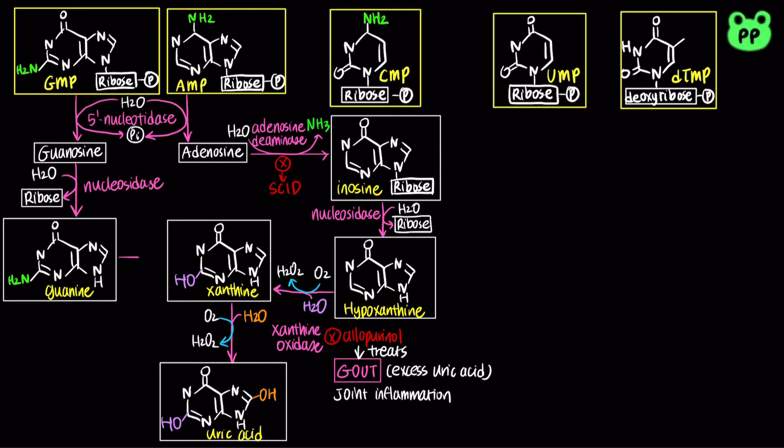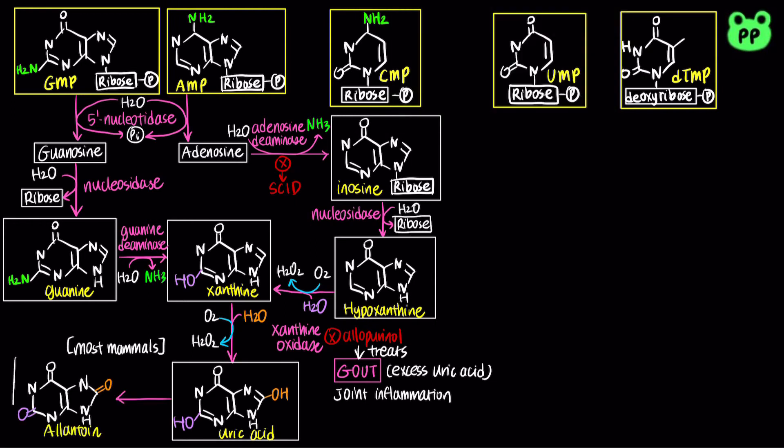Guanine then undergoes hydrolytic removal of its amino group by guanine deaminase, producing xanthine, which is subsequently oxidized to uric acid by xanthine oxidase. In most mammals, uric acid is further oxidized to allantoin by the enzyme uric oxidase.